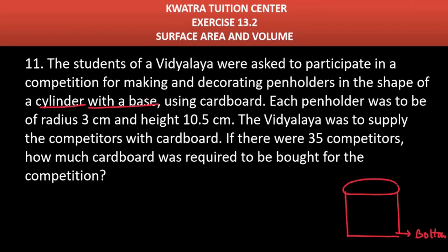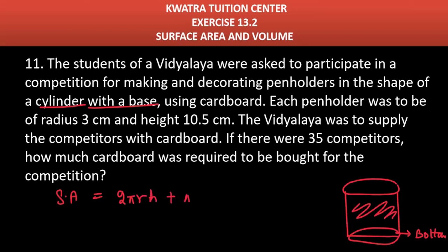What will be the surface area here? It must include the curved surface area (CSA) and its bottom part. The curved surface area is 2πrh, and the bottom part is basically a circle, so its area is πr².